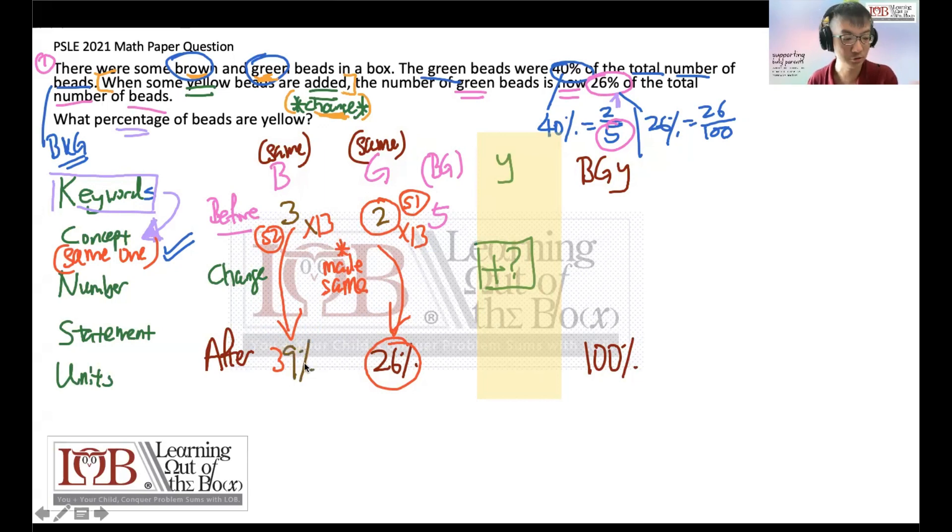Let's do a quick check before we move on. This is the indication that you need to do a quick check before you move on. Let's do this again. 2 over 5. If you are not very sure, this 2, when you change the fraction, you link to G. And then 5, you link to B and G. So let's do a quick check. BG is 5, G is 2, B is 3. Then the green beads is now 26%. This is all correct and it's given. So we make them the same. Times 13. Times 13 as well. 39%.